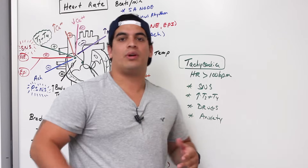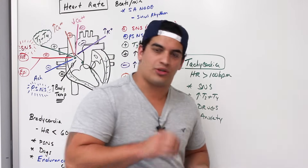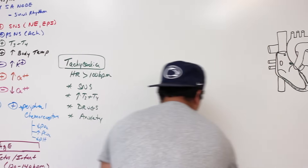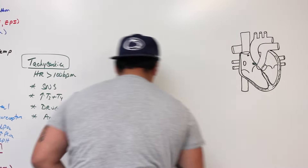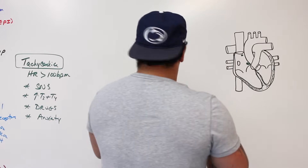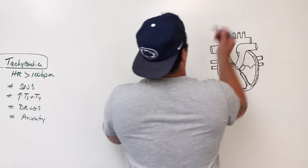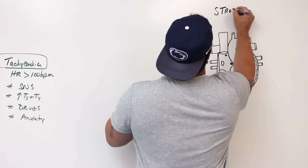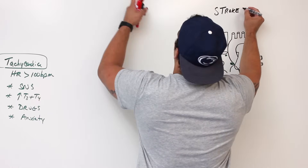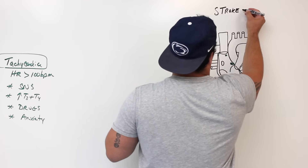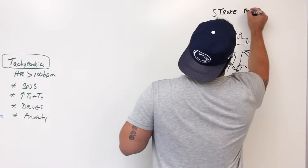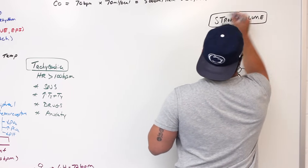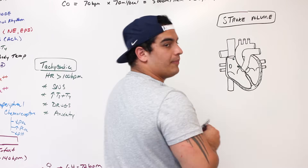Now let's talk about stroke volume. Stroke volume is basically the milliliters of blood pumped out of the ventricles per beat. There is actually an equation for stroke volume that we need to dig into.